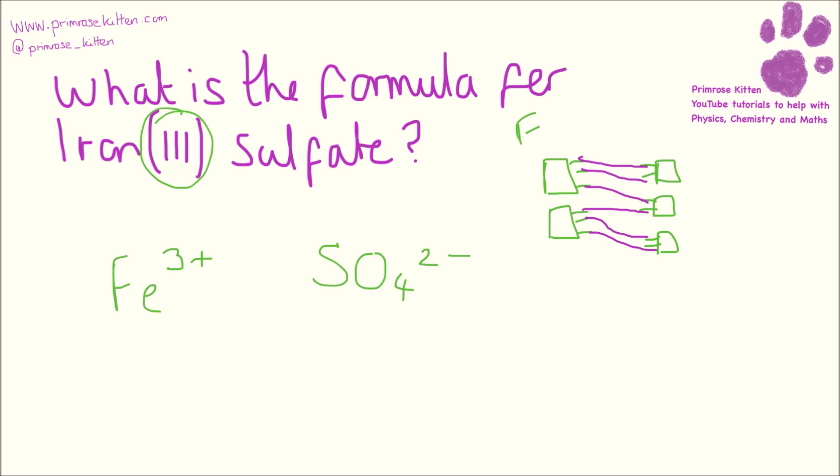So there we have it. Iron, sulfate. We have two of those and we have three of those. So the formula for iron 3 sulfate is Fe2 brackets SO4 3. Iron 3 sulfate.